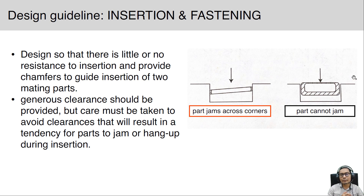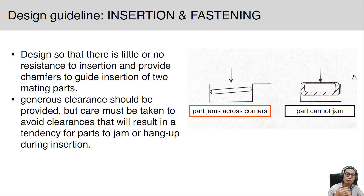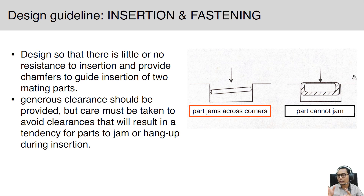For insertion and fastening: design so that there is little or no resistance to insertion and provide chamfers to guide insertion of two mating parts. A generous clearance should be provided, but care must be taken to avoid clearances that result in a tendency for parts to jam or hang up during insertion. The first figure with the red box shows the part jamming across the corners, while the second design prevents jamming.